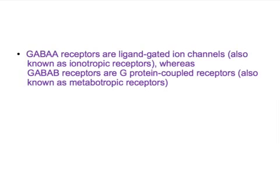Regarding their mechanisms: benzodiazepines increase the frequency of chloride channel opening, whereas barbiturates increase the duration of chloride channel opening. This is a key distinction — benzodiazepines increase frequency, barbiturates increase duration of the chloride channel opening.